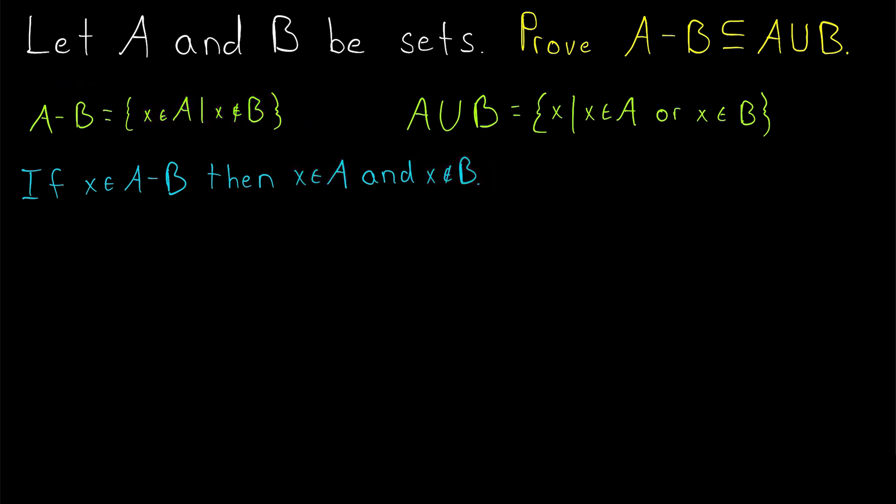To conclude the subset proof, we just have to show that this forces the element to also be in A union B. And that follows immediately by definition. Since x is an element of A, it satisfies the criteria to be an element of A union B. We've shown that any element of A minus B must also belong to A union B. Therefore, A minus B is a subset of A union B, as desired.